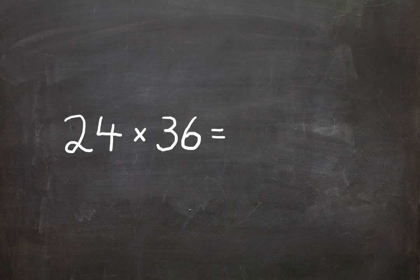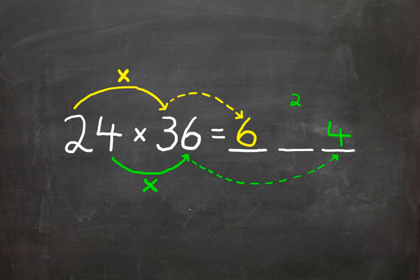We start out with our question. We have our three spaces to fill. We multiply the first two digits of each number to fill the first space. We multiply the last two digits of each number to fill the last space carrying over any tens into the column to the left.